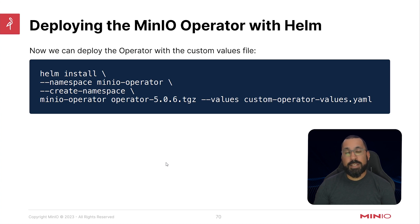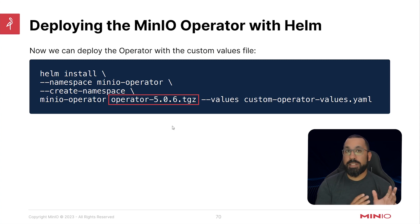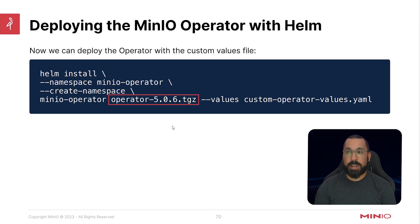Now that we've customized the values file, we can deploy the MinIO Operator. We'll run 'helm install', define the namespace as 'minio-operator', create the namespace if it doesn't exist, and call the deployment 'minio-operator'. We're targeting operator version 5.0.6 using the locally downloaded zipped file rather than calling out to the web dynamically — this is because we've already pulled it down to modify the values. We then specify our custom operator values file as the values file for the deployment, and Helm handles the rest.